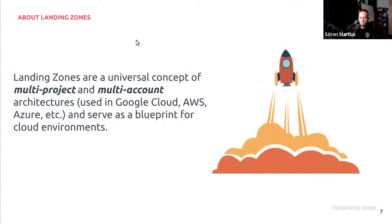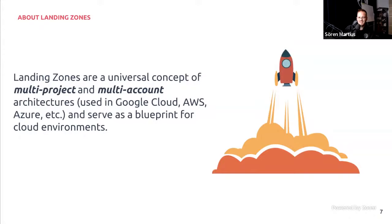First, what are landing zones? Landing zones are a universal concept of multi-project and multi-account architectures used in hyperscalers: Google Cloud, AWS, and Azure. The way I frame it is that they serve as a blueprint for cloud environments. There is no standard definition or one-size-fits-all definition — they are evolving products. Every organization has its own requirements and looks at landing zones differently. The complexity depends on whether you're a startup, SMB, or enterprise, and as you grow, the landing zone may evolve.